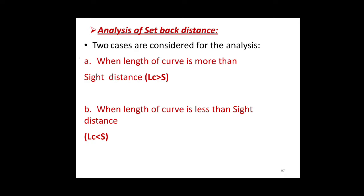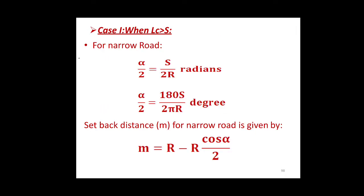For the analysis of the setback distances, two cases are considered. First, when the length of the curve is more than the side distance, that is LC is greater than S. Second case, when the length of the curve is less than the side distance, that is LC is less than S.